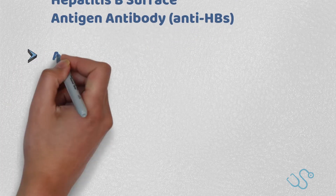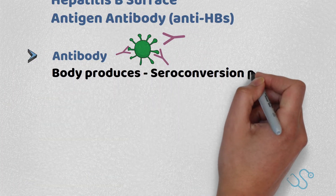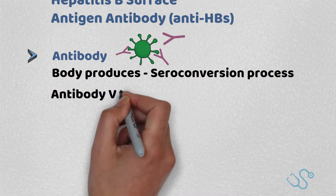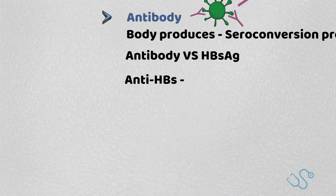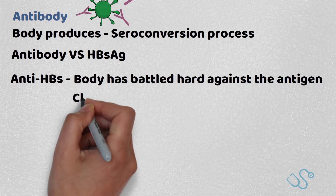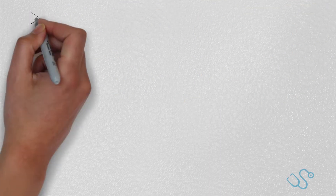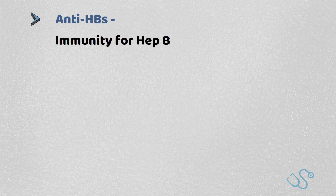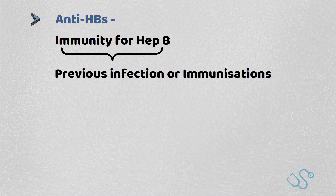Hepatitis B surface antigen antibody. This is the antibody the body produces as part of the seroconversion process — essentially an antibody against the Hepatitis B surface antigen. When you see this antibody, it indicates the body has battled against the antigen and cleared it, with resolution of infection. It means the patient has immunity to Hepatitis B, either due to previous infection or via immunization.